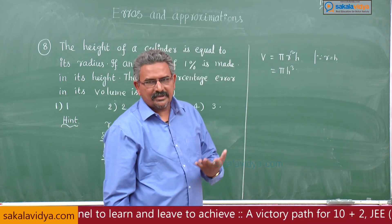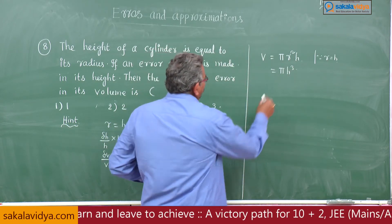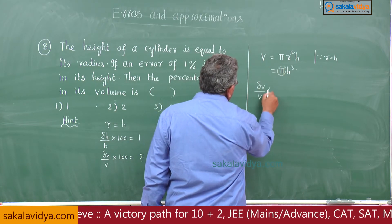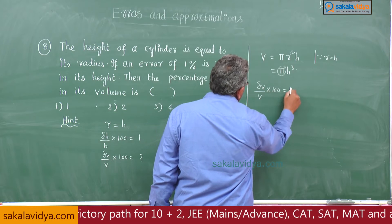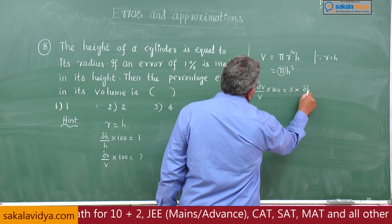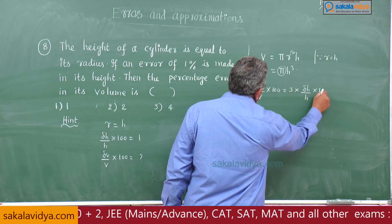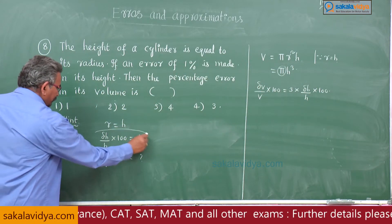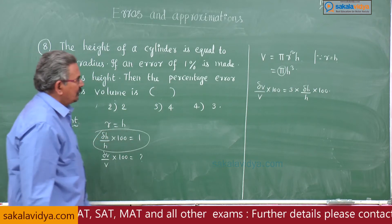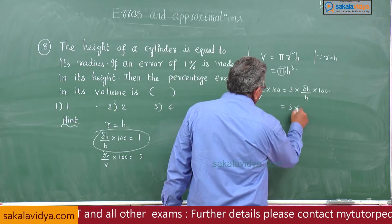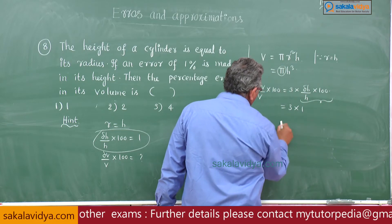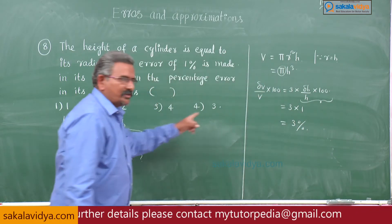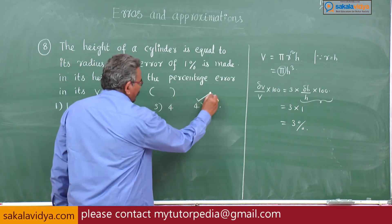Now we can easily write the percentage error in volume. Pi is constant, so delta v by v into 100 equals 3 times delta h by h into 100. This is given as 1 percent, so the answer is 3 times 1, which is 3 percent.